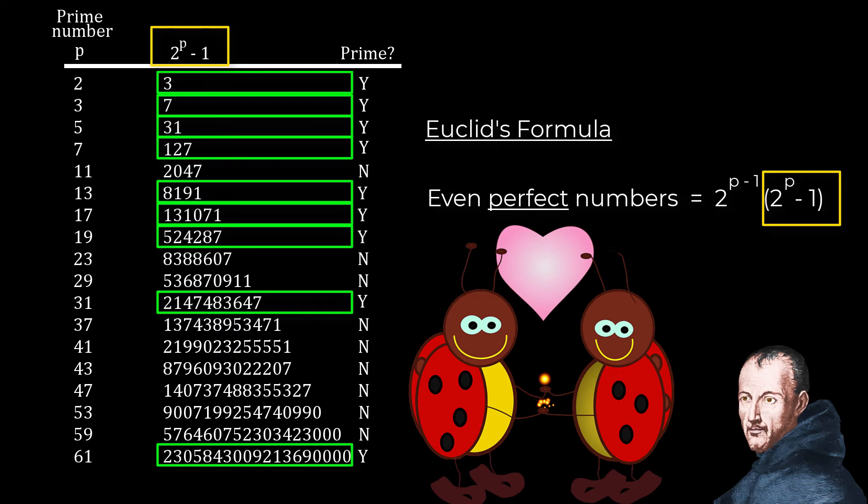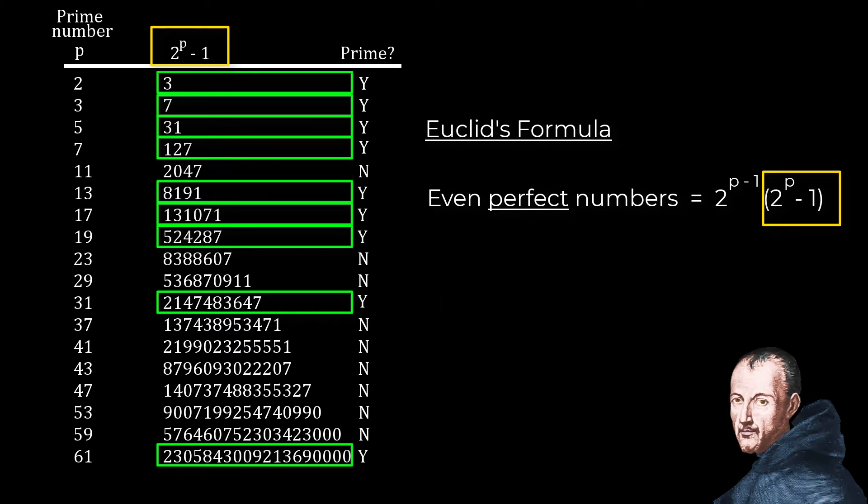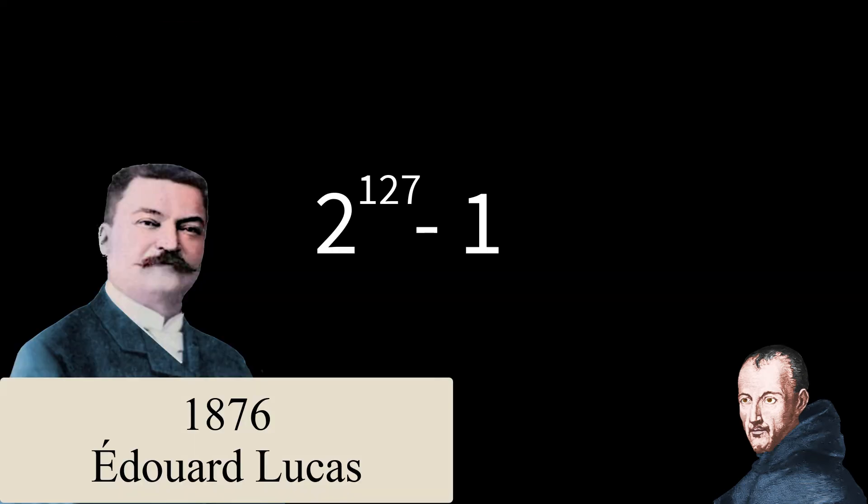Mersenne primes become very sparse very quickly, much faster than the rate that prime numbers themselves become rarer. In 1876, Eduard Lucas discovered the largest Mersenne prime that's been found without computers.